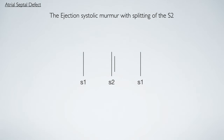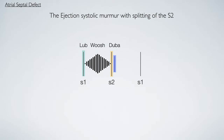Let's start by reviewing the murmur of atrial septal defect. This presents with an ejection systolic murmur and splitting of the S2 heart sound. This murmur occurs during systole and is a crescendo-decrescendo murmur. To help commit this murmur to memory, you can use the phrase 'lub whoosh dubber'. Let's add in the murmur now so you can appreciate how it sounds.